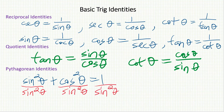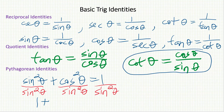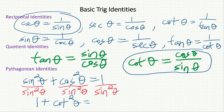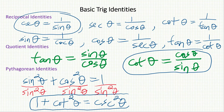Sine squared theta over sine squared theta is just 1. Cosine squared theta over sine squared theta — since cosine over sine is cotangent, having two of them squared gives us cotangent squared theta. And 1 over sine squared theta: since 1 over sine theta is cosecant theta, this becomes cosecant squared theta. So the second Pythagorean identity is: 1 plus cotangent squared theta equals cosecant squared theta.